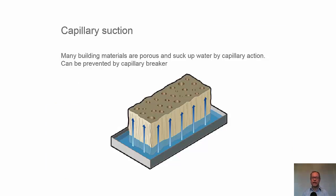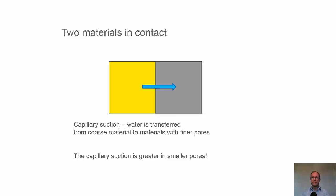Capillary suction is a fact that must be accounted for in the design of buildings. For instance, porous building materials filled with small holes can have capillary action, and we have to break it. Otherwise, water will go into organic materials and cause a lot of damage. We also find this phenomenon when we have different materials in contact with each other, even if they're not very wet. The materials with the smallest pores will have the highest suction, so they will suck moisture from the coarser building materials. One example is wood in contact with concrete, where wood will suck water from the concrete.